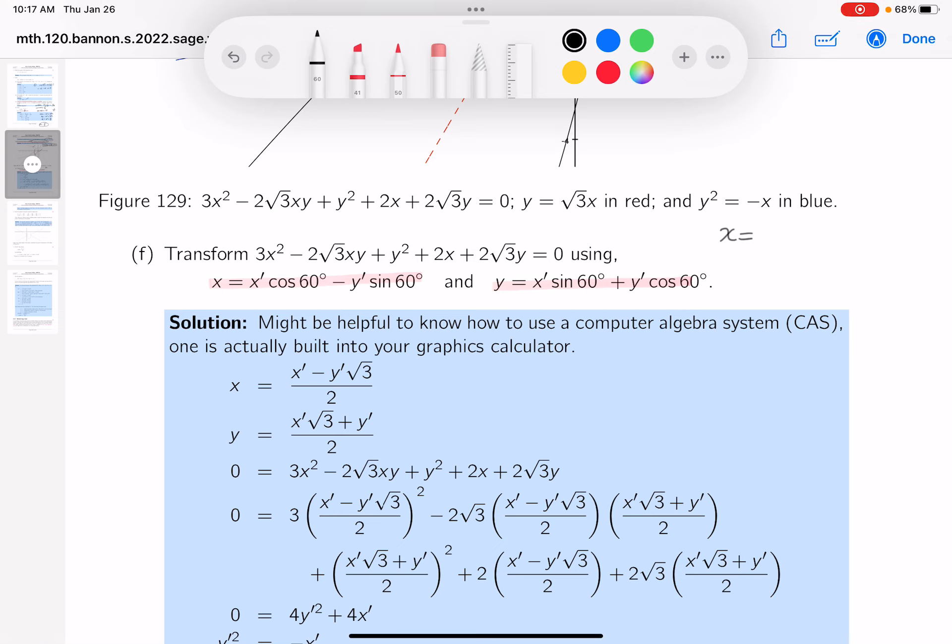All right. I'll write that down for you. Times the cosine of 60 degrees, which is a half. Minus Y prime. What's the sine of 60 degrees? Root 3 over 2. I want to just rewrite it a little bit differently. I'm going to write it as a common number of 2.